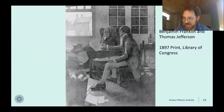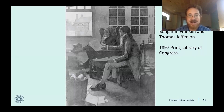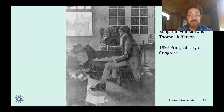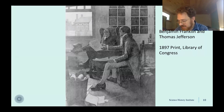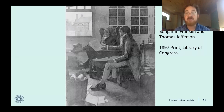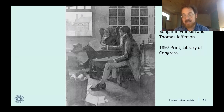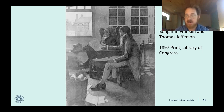One person contributing to this understanding was Benjamin Franklin, here seated behind Thomas Jefferson. In his role as a newspaper publisher, he gathered newspapers from across the colonies looking for interesting stories. During the 1770s, he also realized he could track reports of individual storms moving from colony to colony, city to city — especially storms that moved northward and eastward following the curve of the American colonies.